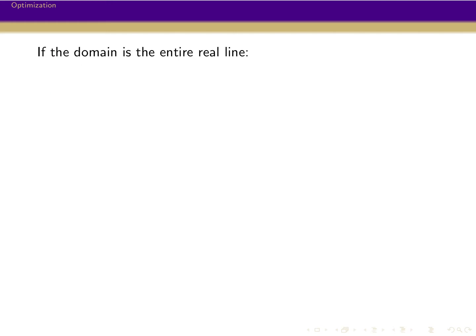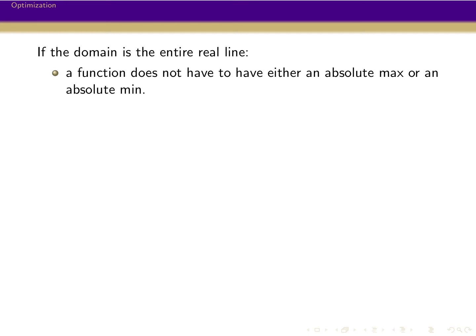So there are a couple different options here about what can happen, and it really boils down to what's true about the domain. If the domain is the real line, then not every function necessarily has an absolute max or an absolute min. It could have one but not the other, it could have both, it could have neither.